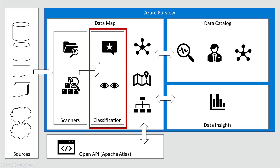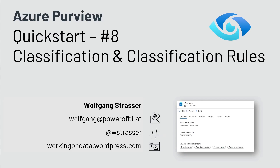To sum it up: data classifications allow you and your data map to be more specific and get more knowledge about the data that is stored. The classification is just a name — the real magic lies in the classification rule. Classification rules can be regex-based or dictionary-based, and there are more than 200 classifications with appropriate classification rules available within Purview. I hope you enjoyed the demo — enjoy your data catalog, classify your data, and see you next time.